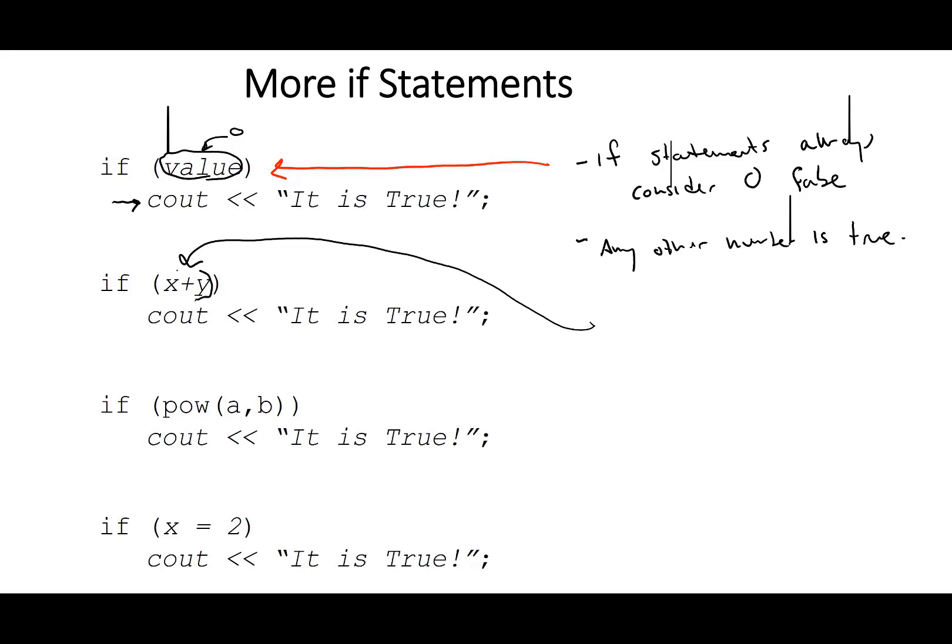We can check math. We could check this x plus y. If x and y are zeros, this statement is going to be false. If one of them has a value other than zero, this is going to be true. We can put a mathematical expression in here, so this pow a b. If a is zero, this statement is going to be false. If a is anything other than zero, that statement is going to be true.